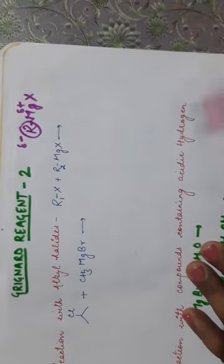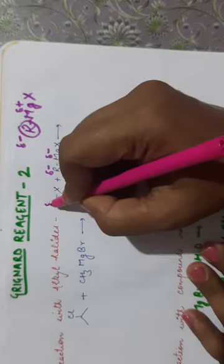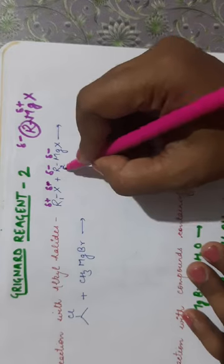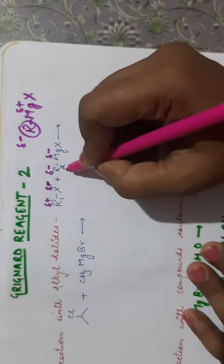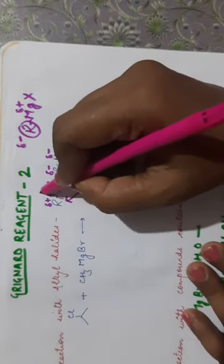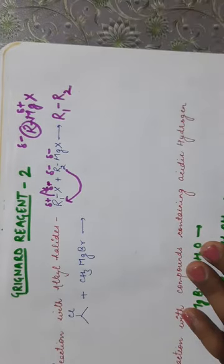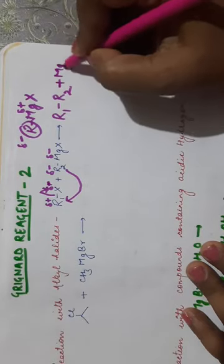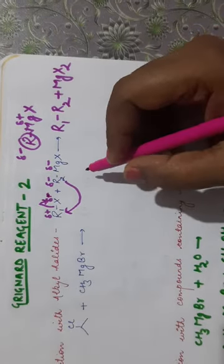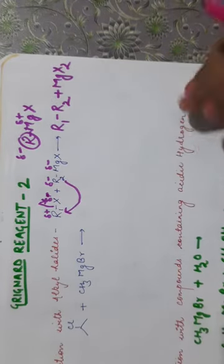In the reaction with alkyl halides, the carbon of the alkyl halide is positive and halogen is negative. The negative carbanion of the alkyl magnesium halide attacks the alkyl group of the alkyl halide, and the halogen leaves. The product formed is R1–R2 plus MgX₂. This is an SN2 substitution reaction where R2 attacks R1 and the halogen is removed as a nucleofuge.